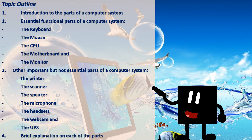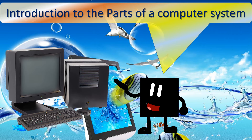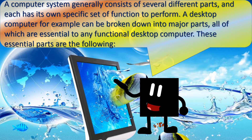We will also have a brief explanation on each of the parts. Introduction to the parts of a computer system: a computer system generally consists of several different parts, and each has its own specific set of functions to perform. A desktop computer, for example, can be broken down into major parts, all of which are essential to any functional desktop computer.